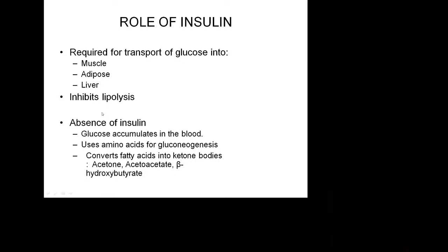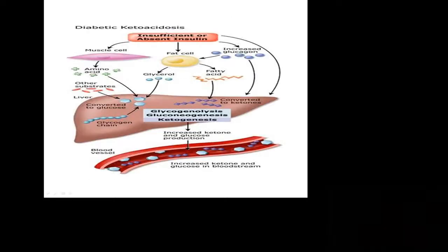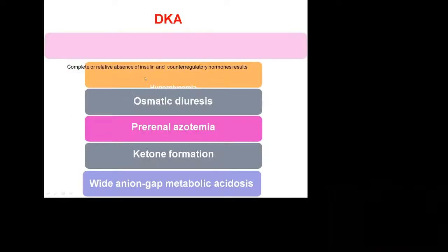Whenever there is absence of insulin, three things happen: glucose comes into the blood from muscles and liver through glycogenolysis; proteins are converted into glucose by gluconeogenesis; and fatty acids are metabolized, producing ketone bodies named acetoacetate and beta-hydroxybutyrate. Whenever there is insufficiency of insulin, fat cells metabolize fatty acids producing beta-hydroxybutyric acid and acetoacetic acid, amino acids are cleared producing glucose by gluconeogenesis, and glycogenolysis converts glycogen into glucose. So there is increased glucose and increased ketones in the blood — hyperglycemia.